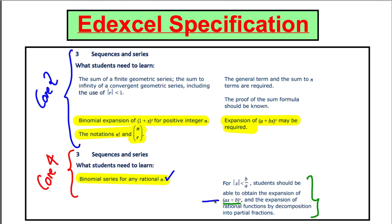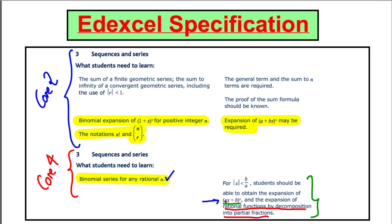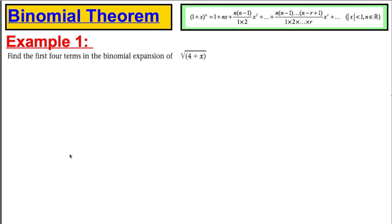But what we haven't really talked about is how to use this to expand something of the form (ax + b) to the power of n. We're going to do that in this video. The video after that will deal with expanding rational functions by decomposing them into partial fractions, but that's for later. So here's an example.